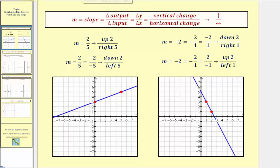Because outputs are y values along the vertical axis, and inputs are x values along the horizontal axis, we can view the slope as the ratio of the vertical change to the horizontal change. So if we're given a point and the slope, after we plot the point, we can use the slope to determine the location of a second point.